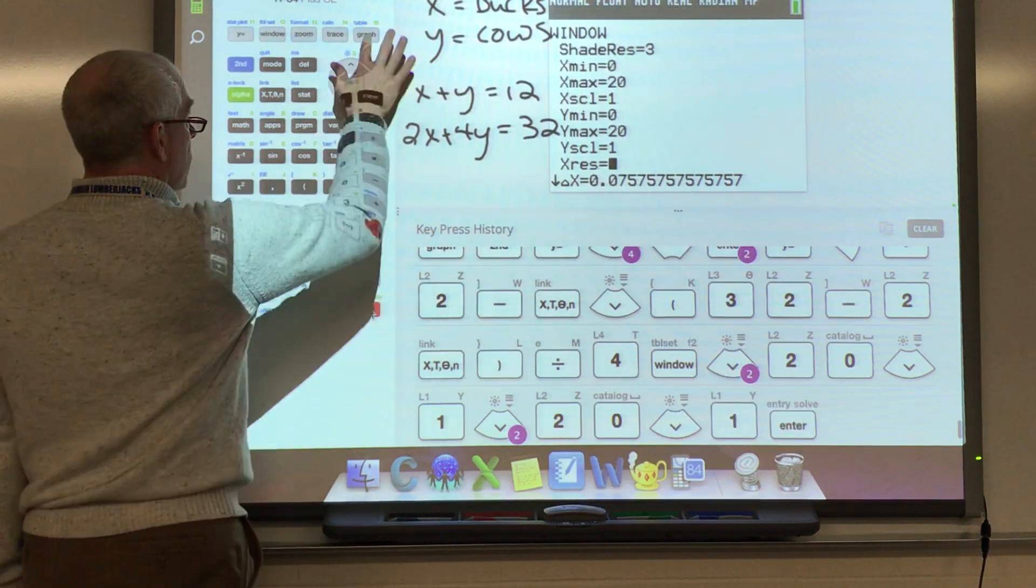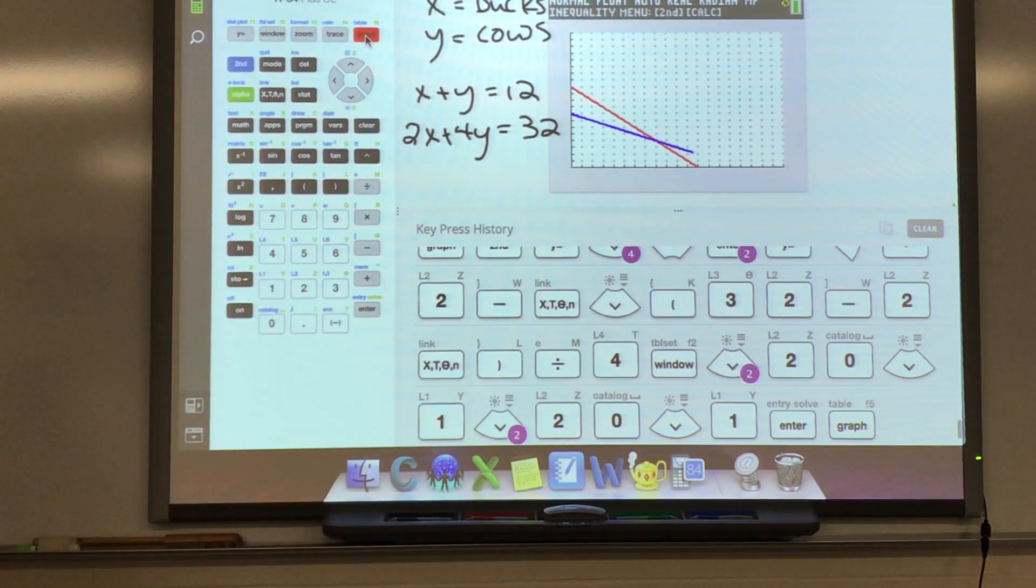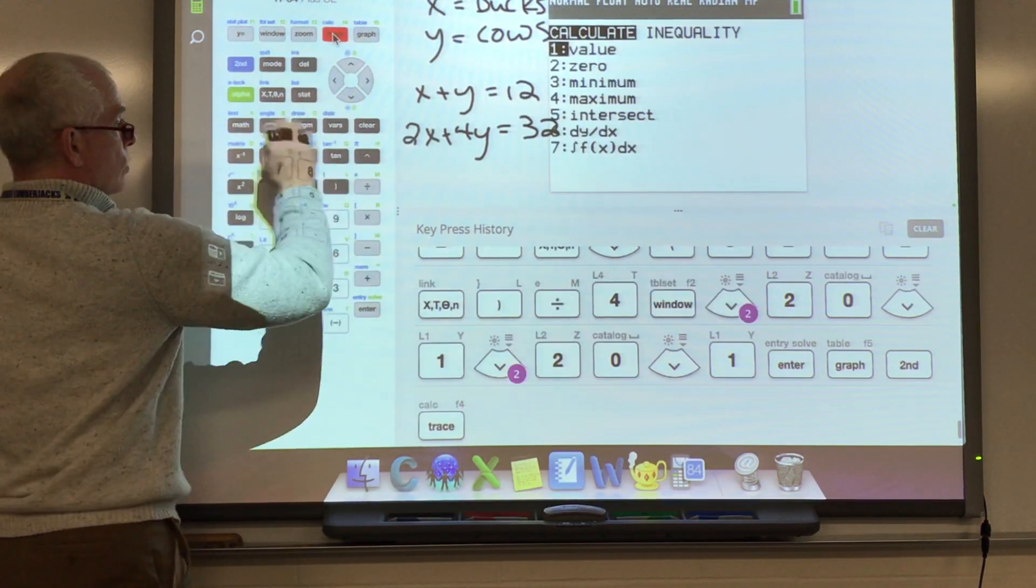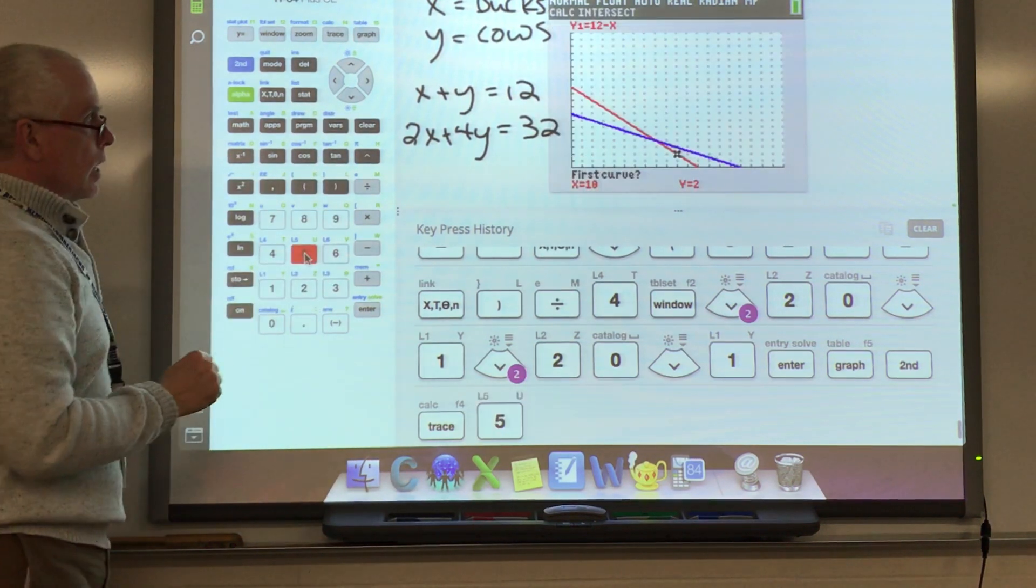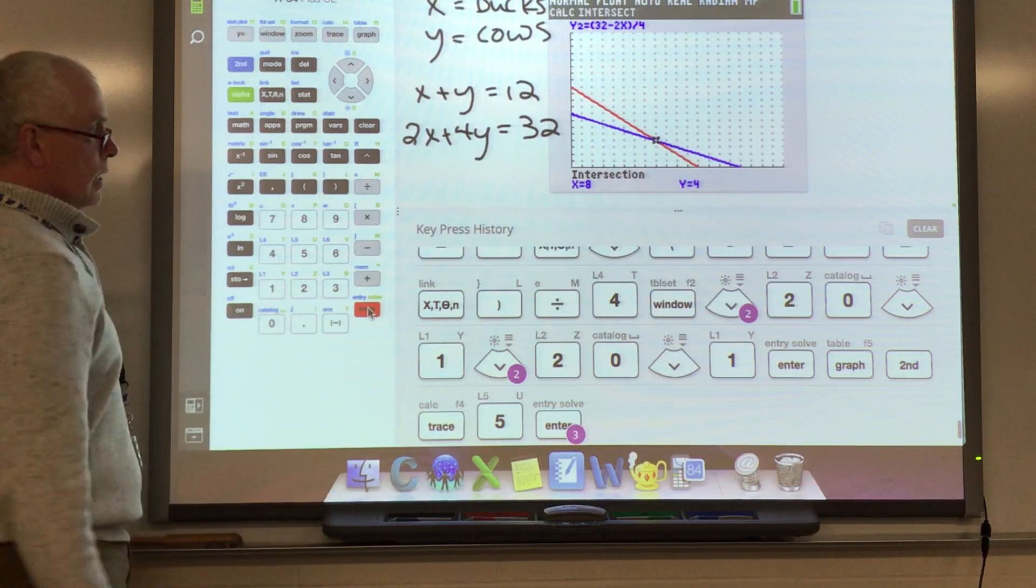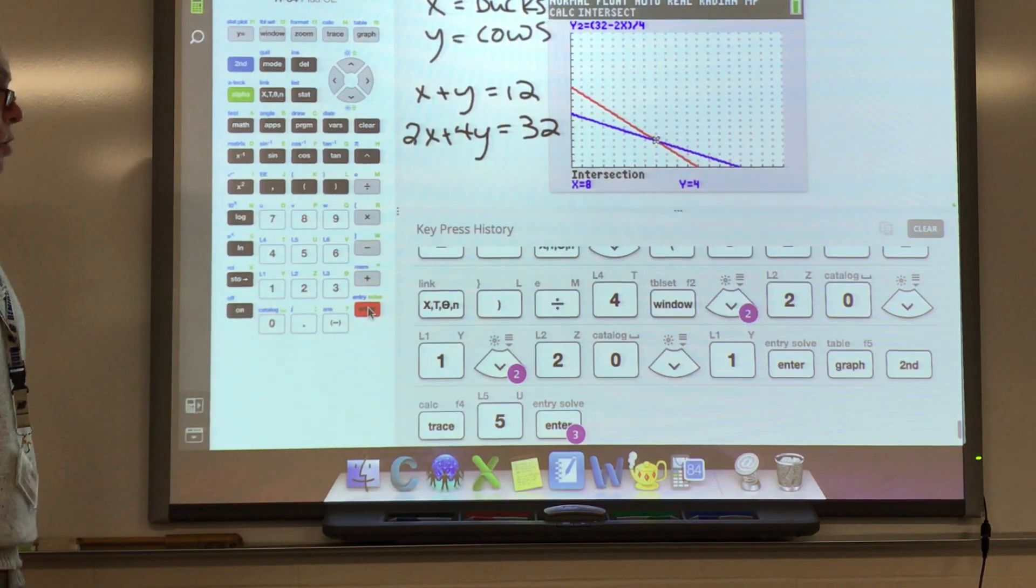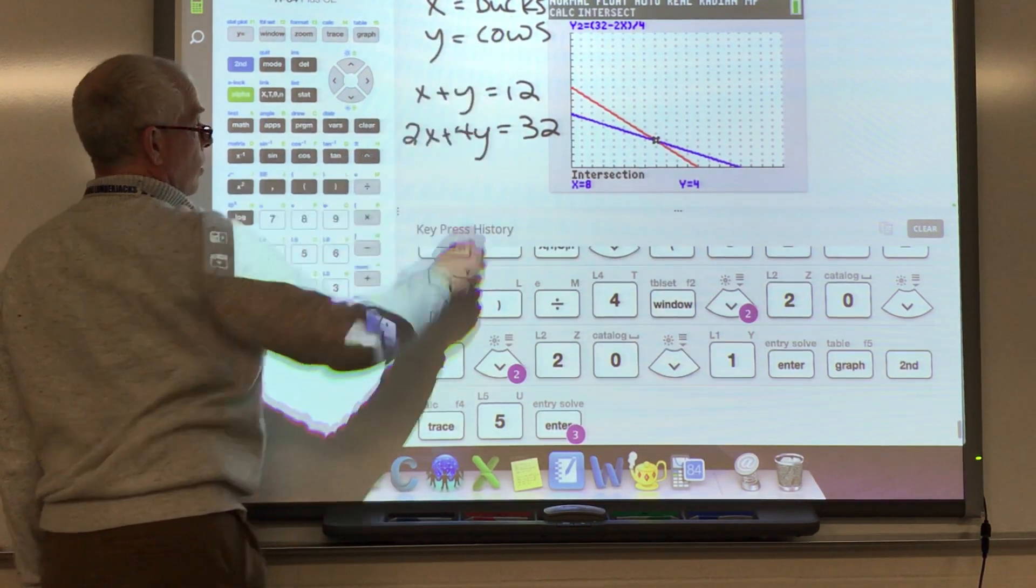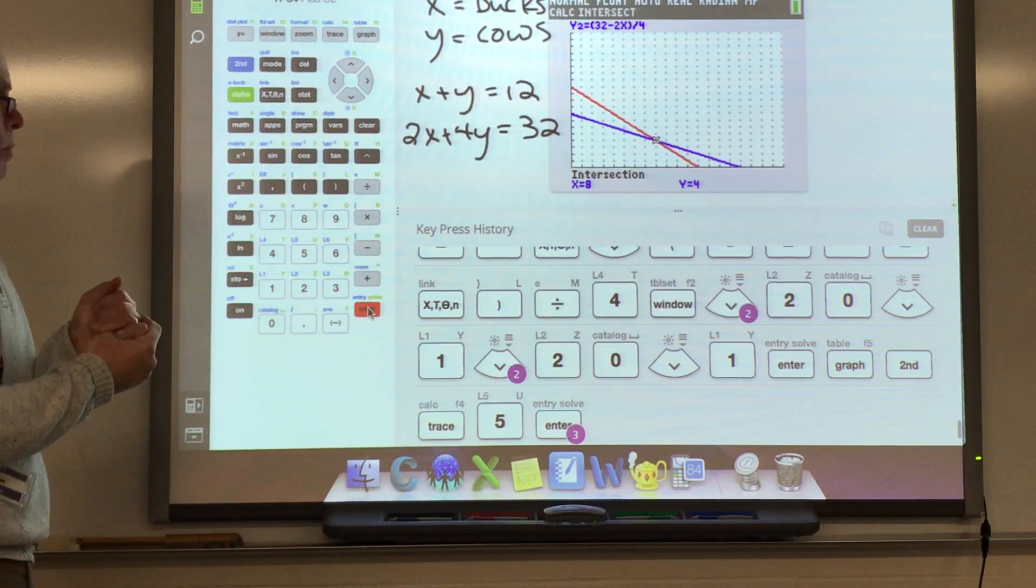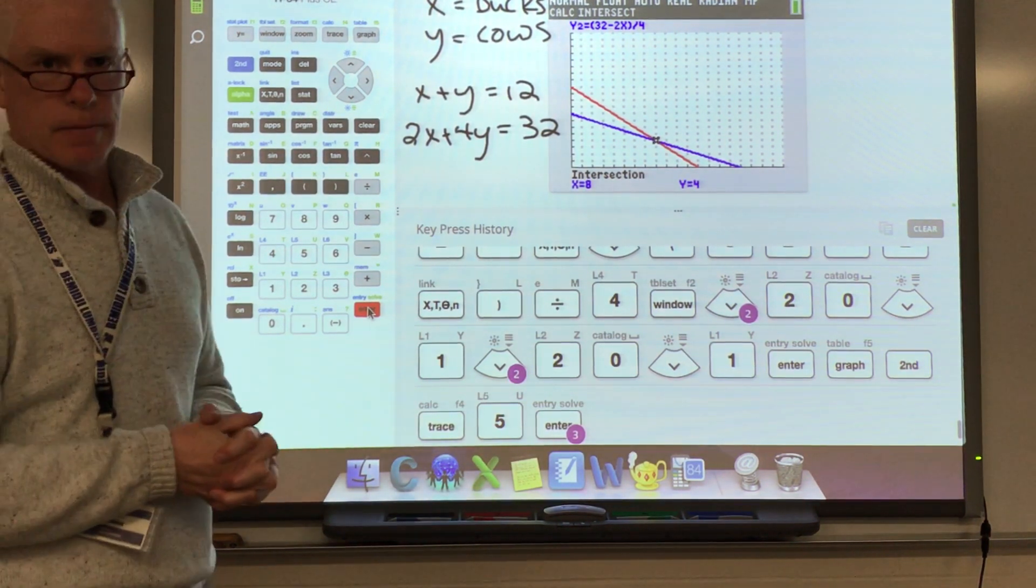And my window, we're talking about ducks and cows and there's only 12 heads. So if I go from 0 to 20 for both of these by ones, I should be more than good. Now I'm going to graph it. What I'm really interested in is where they cross. And if I go up to the calculate menu, I can choose intersect number five. And first curve enter, second curve enter, guess enter. It says the intersection's at eight. So when there are eight ducks and four cows, that's the scenario we're looking at. So we'll stop there for today. I'll get you going on some problems and then I'll do a couple more for you tomorrow. Thanks.